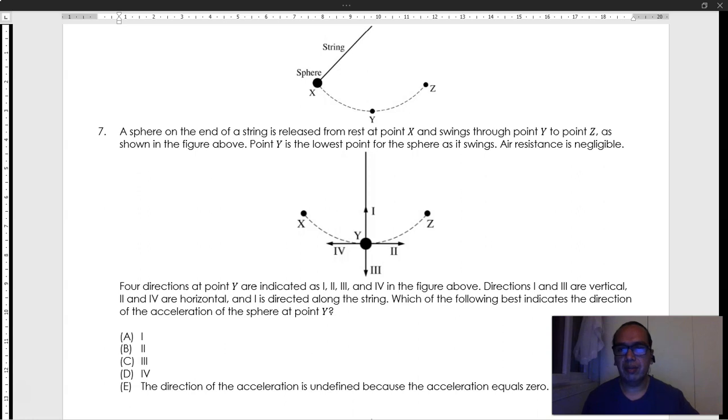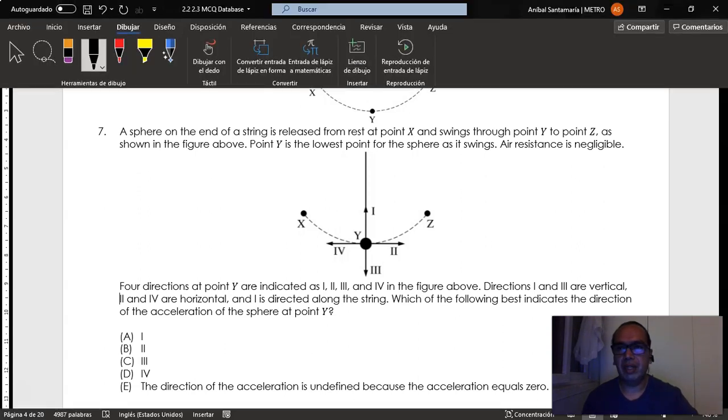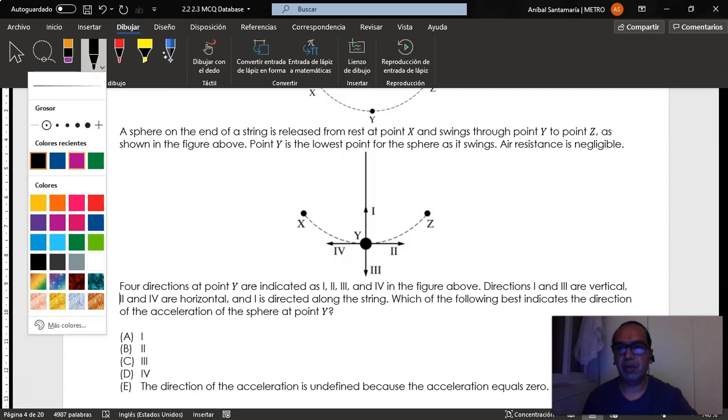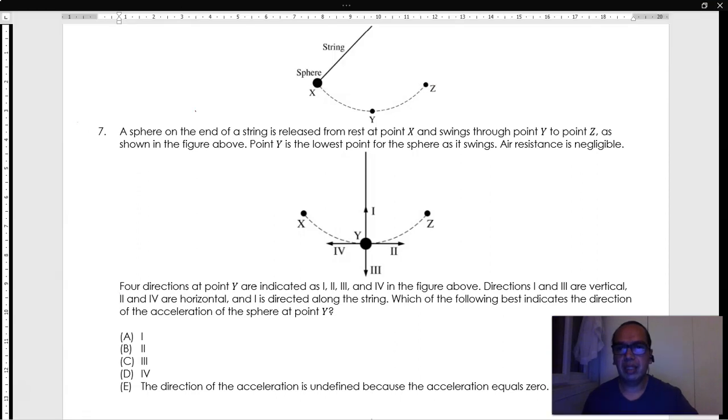Well, first of all, we must remember that if the object is swinging, it is following a circular path. Therefore, there must be some radial acceleration here, which is probably equal to the speed at that instant squared divided by the radius.